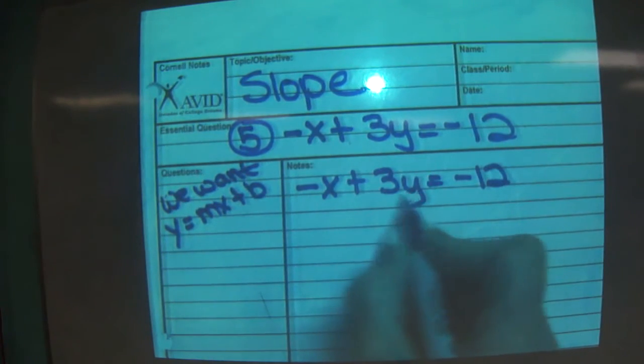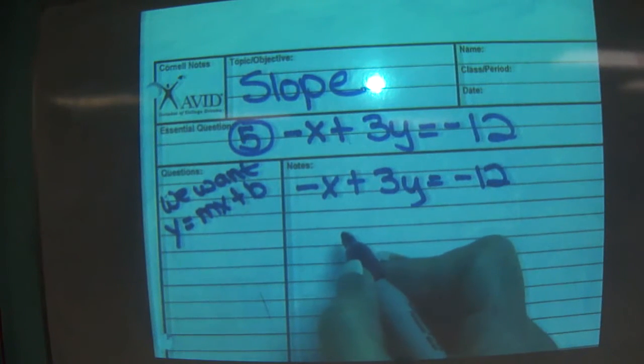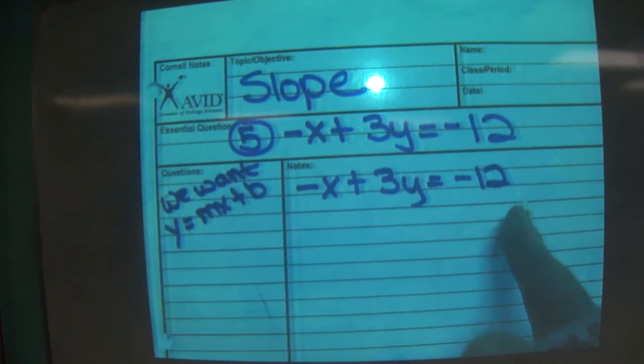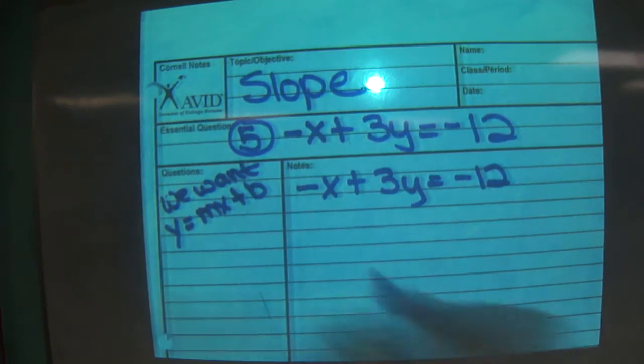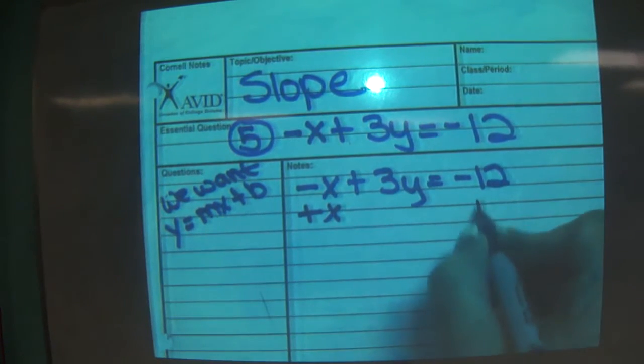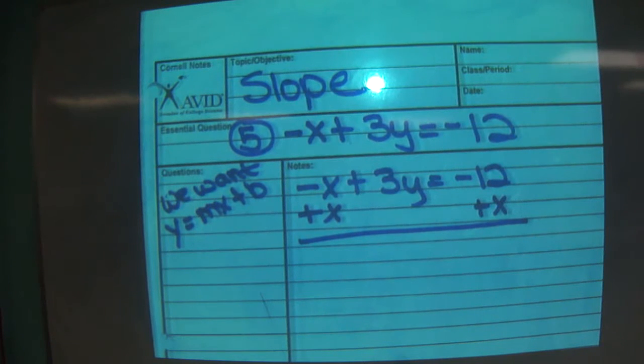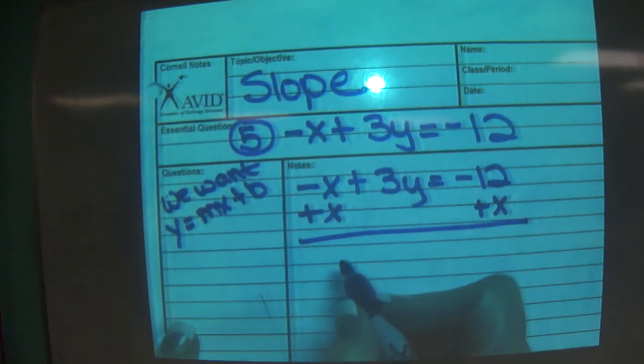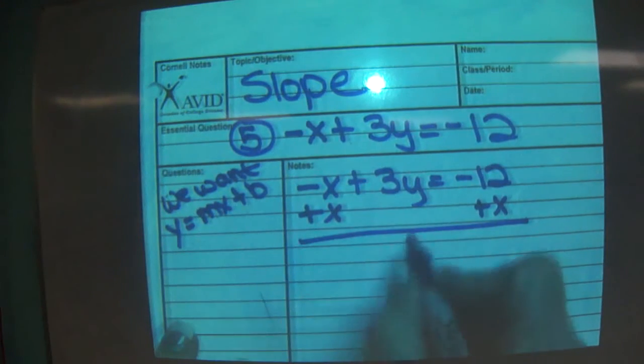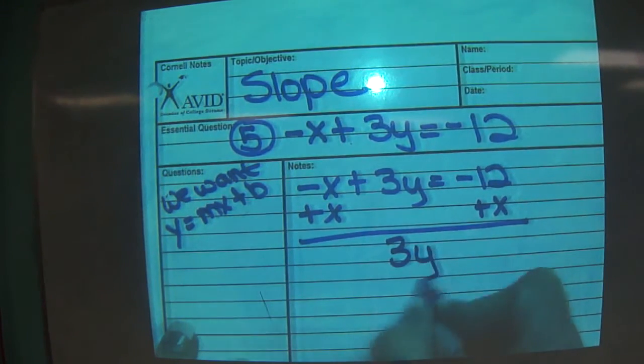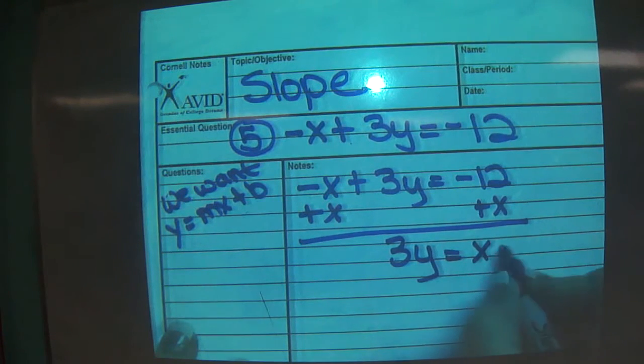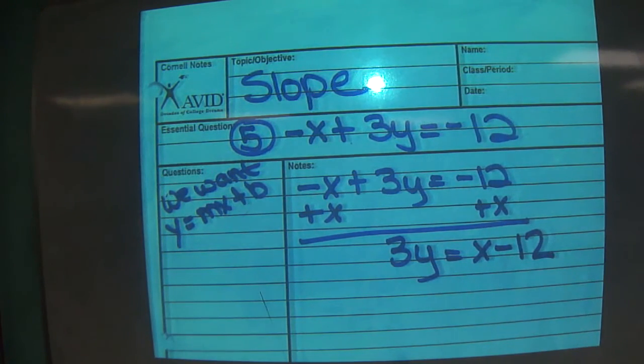Who's hanging with 3y over here? Negative x, right? Can we move negative x over here? How can we do that? Let's add x to both sides, can't we? If it's an equation, you can add the same thing to both sides. Now negative x and x is 0x, so we can ignore that now. 3y equals x minus 12. So far so good?